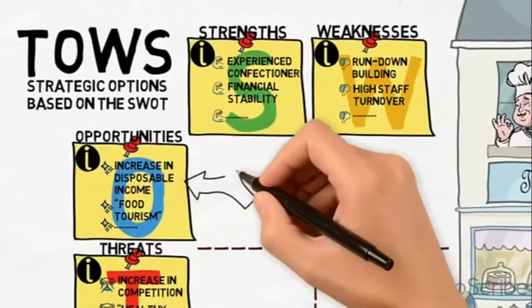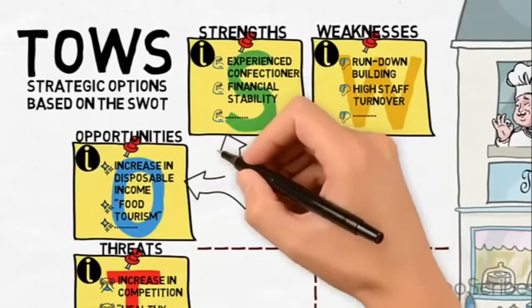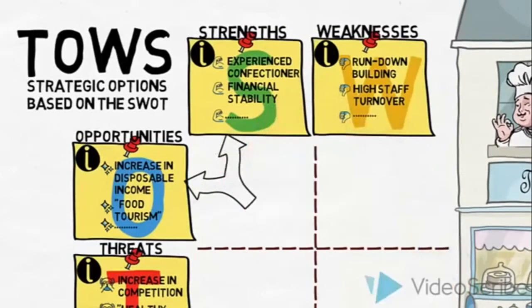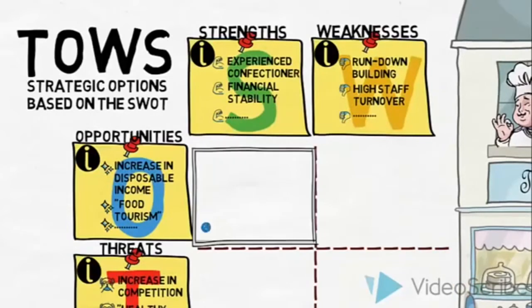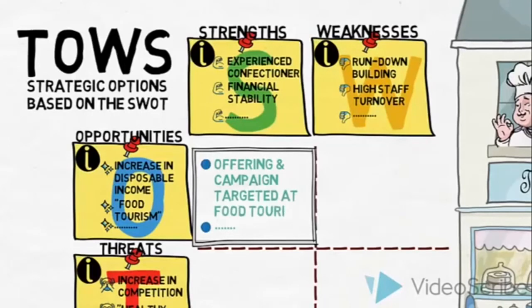Now let us see what strategic options our strengths and opportunities allow us to create. One option could be to create an offering and campaign targeted directly at food tourists. Our strengths in having a highly skilled and experienced confectioner allows us to capitalize on this recent trend.